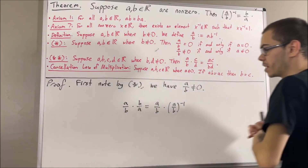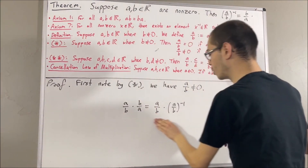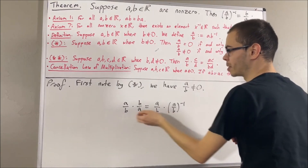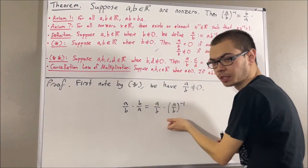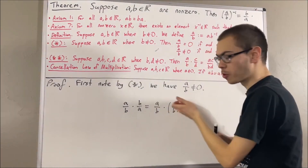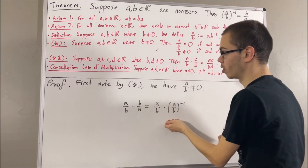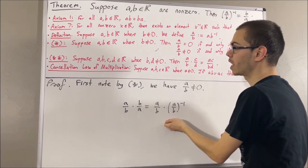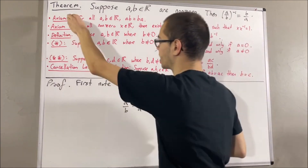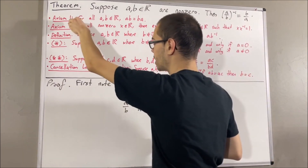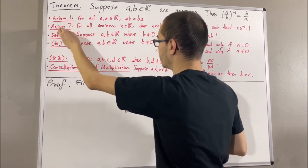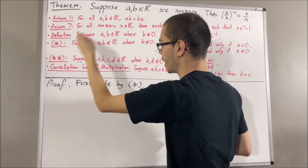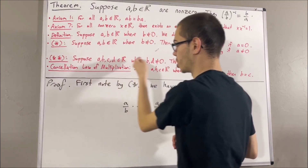Okay, now to show that these two are equal, we are going to establish a chain of equalities. And through that chain of equalities, we are going to be applying axioms 1 and 7, the definition of division, and star star.